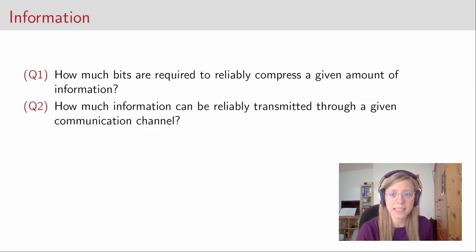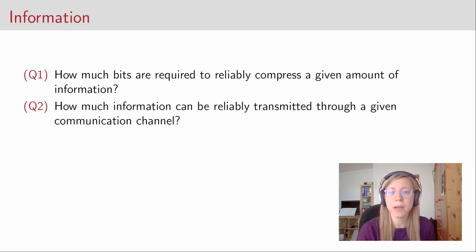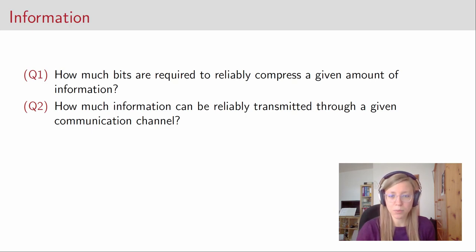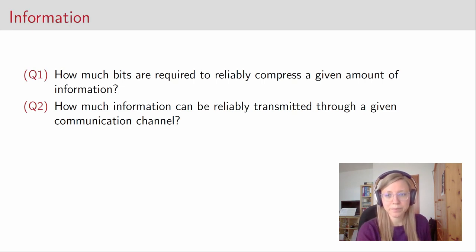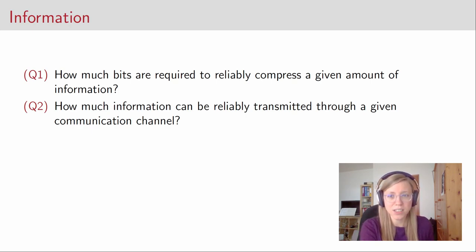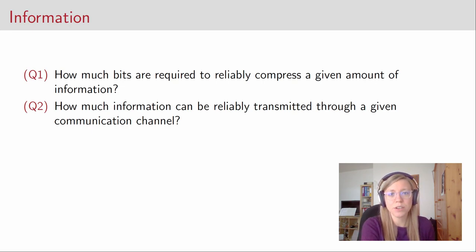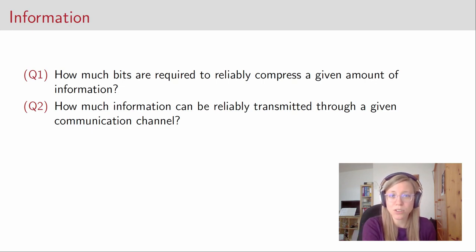The second question he was asking was how much information can be reliably transmitted through a given communication channel. So if Alice and Bob want to communicate with each other over a classical channel, how much information can they send through the channel per channel use? These are the two questions that motivated the study of information, but before you can answer these questions you have to answer an even more fundamental question: how do we mathematically describe information at all?